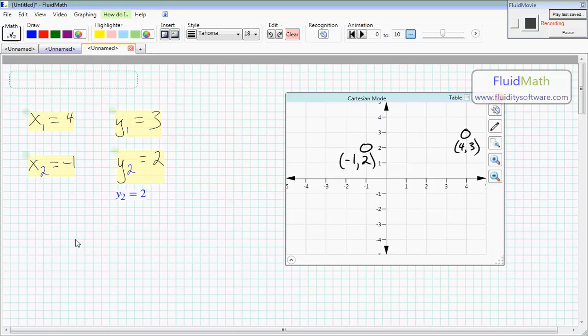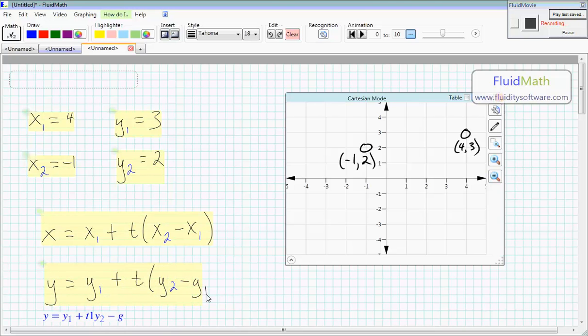So let's see. Now what we're going to do is create a parametric equation and we'll say x is equal to x1 plus t times x2 minus x1. And then we'll say y is equal to y1 plus t times y2 minus y1.